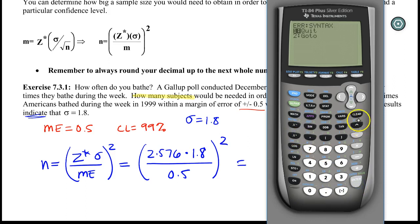You can do 2.576 times 1.8 divided by 0.5. Then just don't forget that you need to square this to get your value.